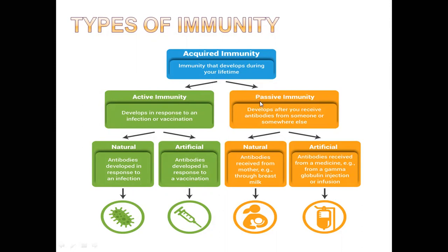Active immunity has two types: natural and artificial. Natural active immunity occurs when a pathogen enters your body and antibodies develop in response to that infection naturally. For example, if a bacteria enters your body and causes disease, it also stimulates your immune system to produce antibodies and memory cells against that bacteria.